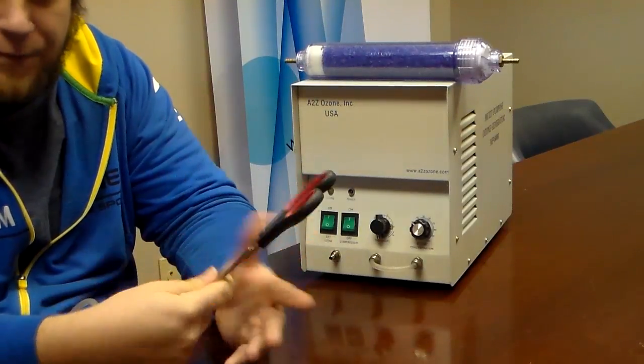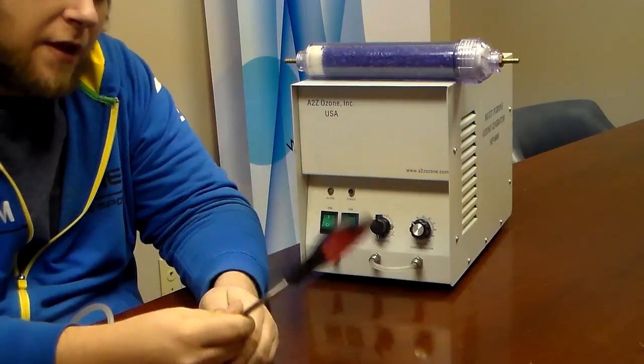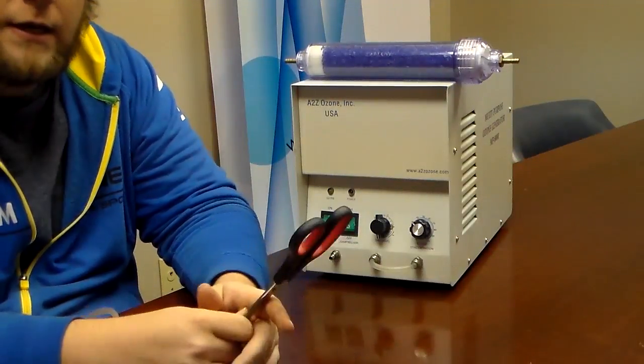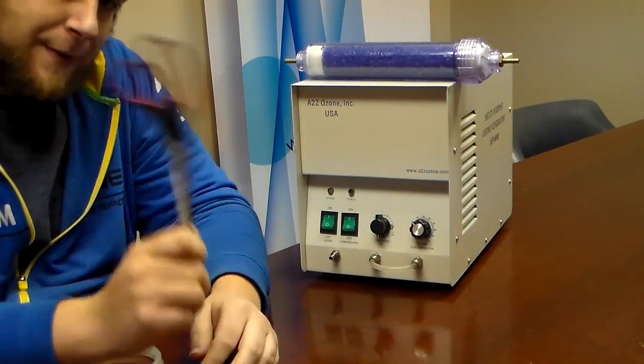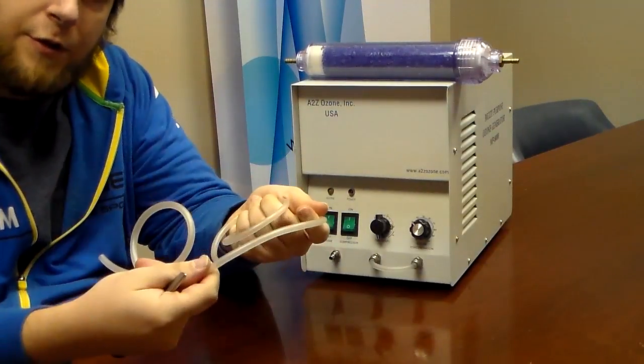We're installing a silica air dryer to an MP series unit. The unit that we're using today is an MP8000. There's only one real tool that you're going to need to be able to do this: a pair of scissors. You're going to need the scissors to cut your tubing.